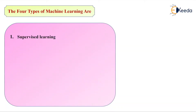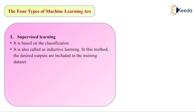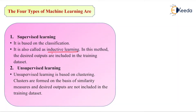In machine learning there are different types of algorithms. The first is supervised learning. Supervised learning is based on the classification technique and is also called inductive learning. In this method the desired outputs are included in the training data set always. The second type is unsupervised learning, which is based on the clustering technique. Clusters are formed on the basis of similarity measures and desired outputs are not included in the training data set. These are just basic introductions; we will see those things in more detail in the next videos.